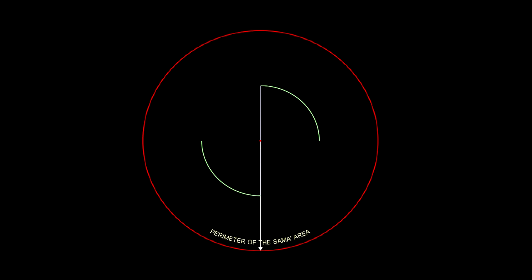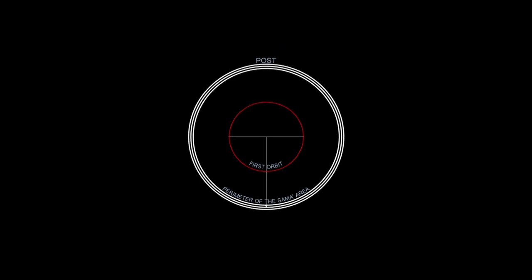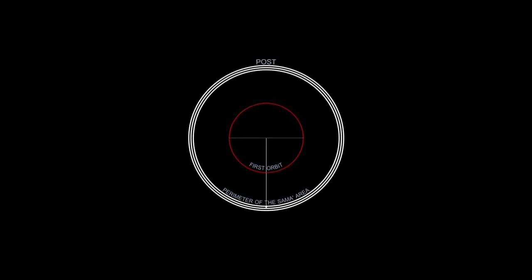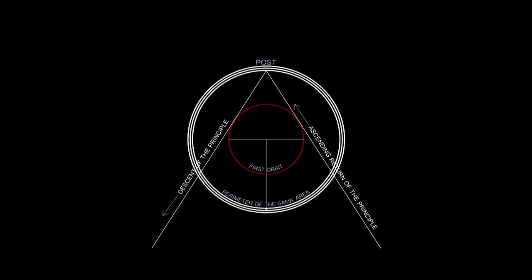The central circle, having a diameter which is the radius of the Sama circular area, represents the first orbit of the Dervish Path. Two lines, springing from the post where the Sheikh sits, and tangent to the orbit, form an equilateral triangle, symbolizing the descending of life force from the upper unity to the multiplicity.